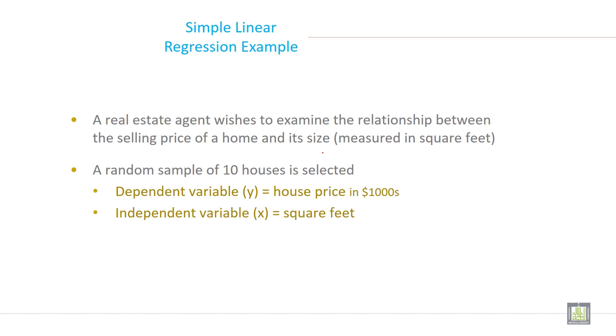Simple linear regression example: A real estate agent wishes to examine the relationship between the selling price of a home and its size measured in square feet. A random sample of 10 houses is selected. Here, dependent variable (y) is house price in thousand dollars and independent variable (x) is square feet.